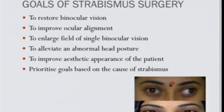Pre-operative evaluation includes cover test at distance and near, with and without glasses, then checking versions, ductions, and if required forced ductions. Orthoptic evaluation includes near point of accommodation, near point of convergence, and stereopsis as routine — especially useful in assessing intermittent exotropia and esotropia. Check for any abnormal head posture: face turn for lateral and medial rectus, chin up or down for vertical muscles, and head tilt for cyclo-torsional muscles such as the superior and inferior obliques.